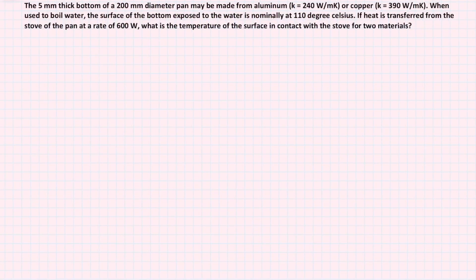The first problem is that there is a 5 mm thick bottom of a 200 mm diameter pan which may be made from aluminum or copper. When used to boil water, the surface of the bottom exposed to the water is at nominally 110 degrees Celsius. Heat is transferred from the stove to the pan at 600 W.